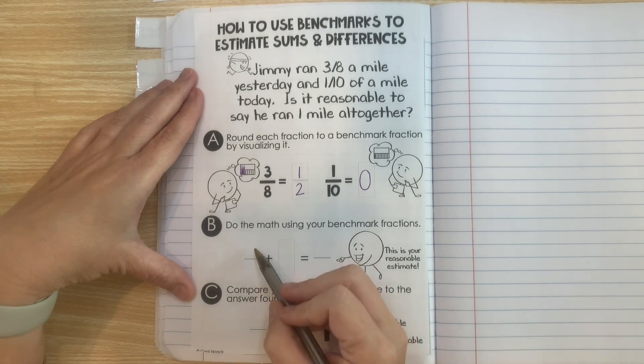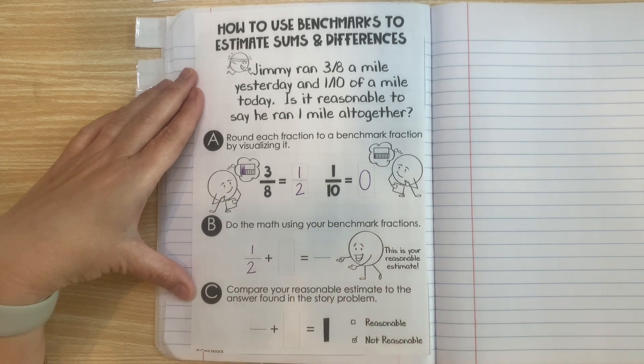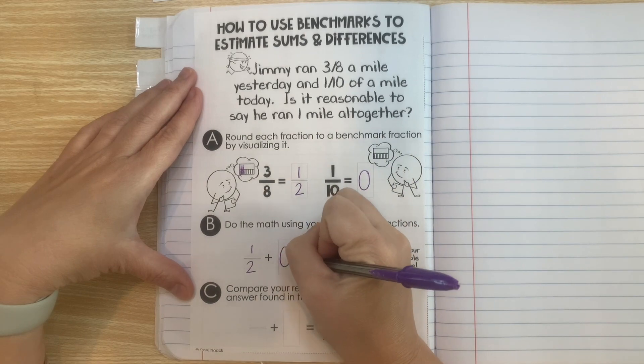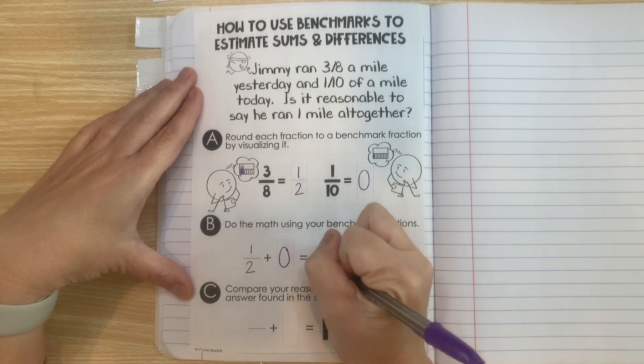So let's just do some math. Let's take our easy fractions to add. So here is one-half. That's easy to work with. And now one-tenth, put that as zero. And we can say one-half plus zero is one-half.